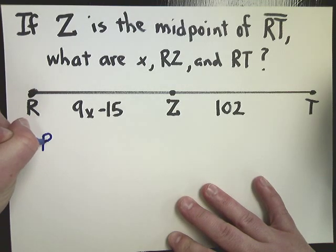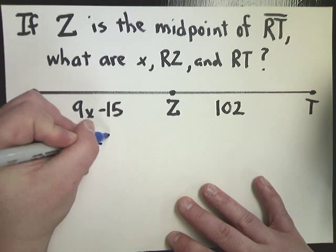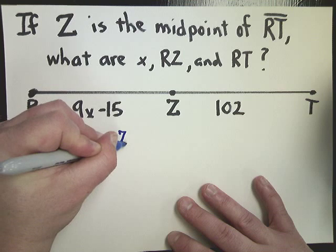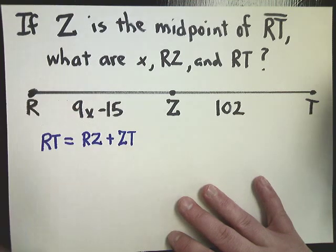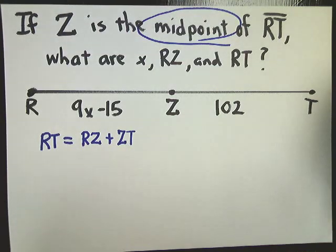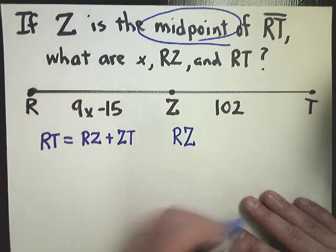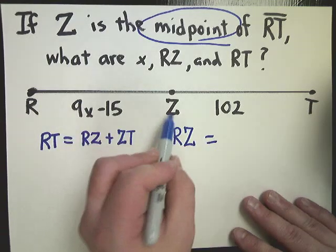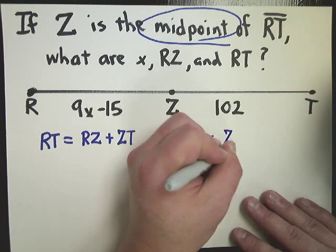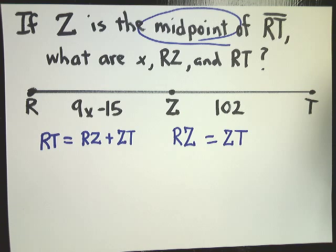RT is equal to RZ plus ZT. What you might also have to say in this case, because we have the word midpoint, is that I'm going to make a statement about RZ and set that equal to the other segment, which is ZT. We're going to fill in as much information as we can here and see if one of the two can get somewhere where we can find an answer. Sometimes you actually have to use both, which may be the case here.